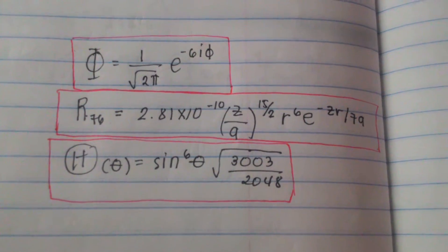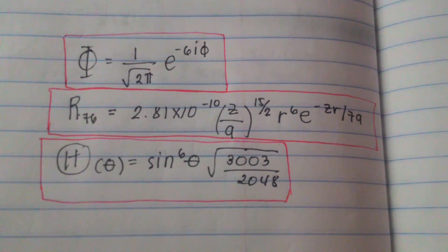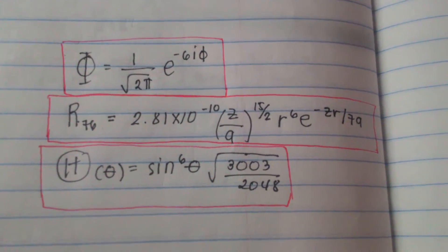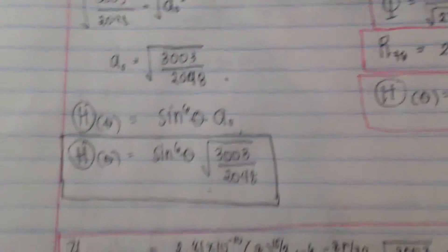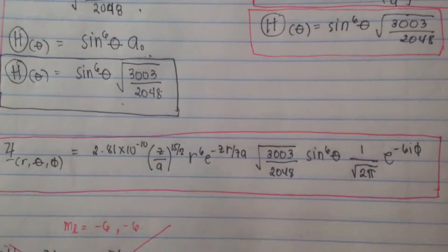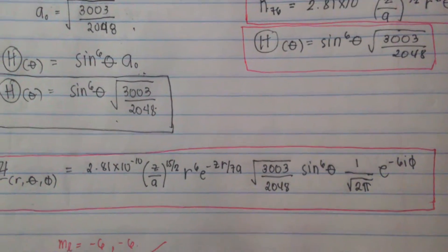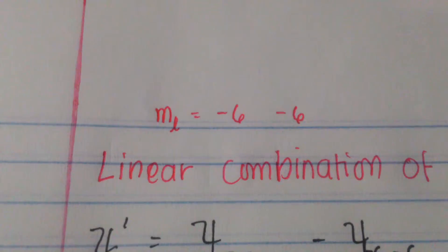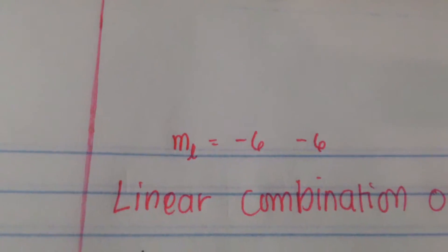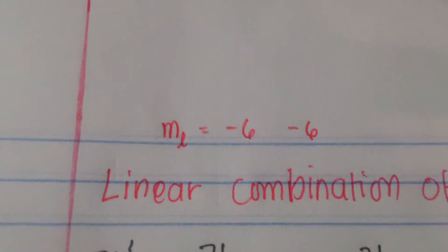Our theta function is therefore θ = sin⁶θ times the square root of 3003 over 2048. These are all the values we obtained for our radial and harmonic functions. Combining these three functions — phi, radial, and theta — we get the complete wave function ψ.